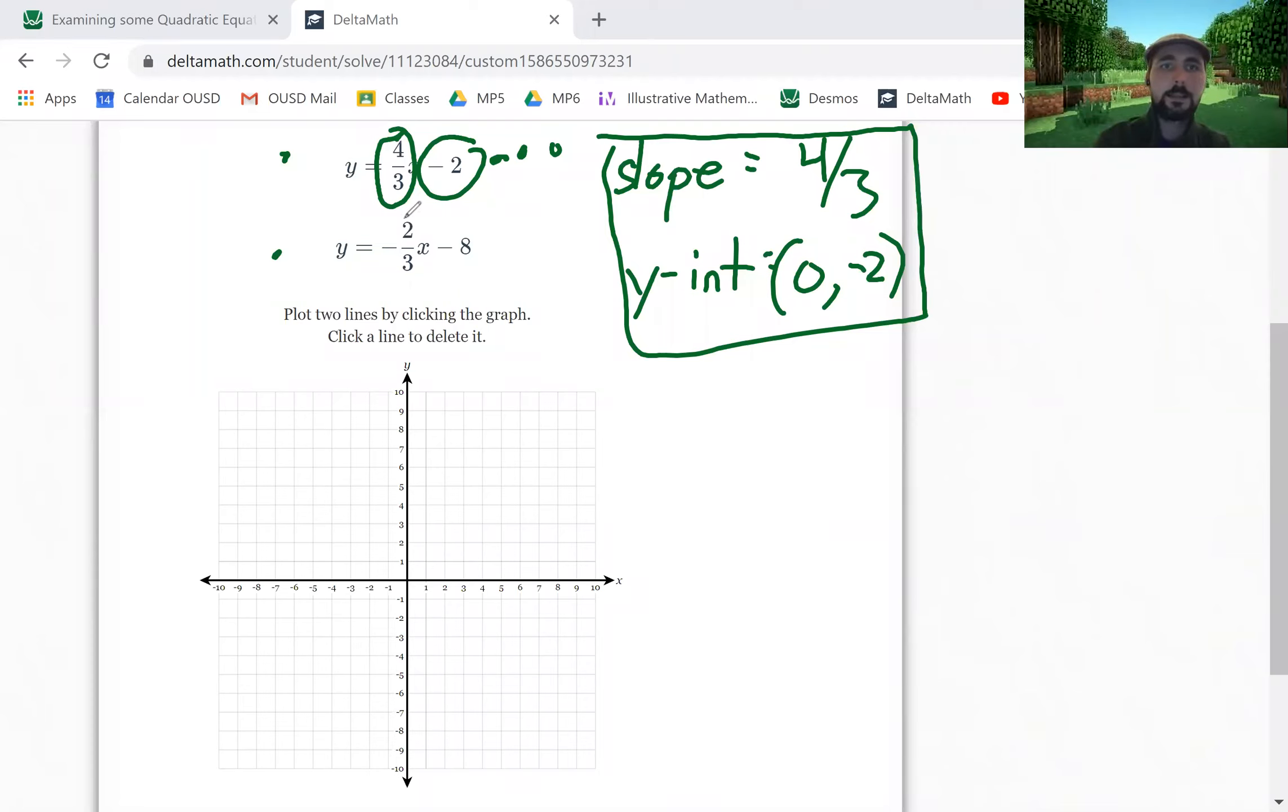We're going to do the same thing. So for the second equation, I see the negative 2 over 3 and I see the negative 8, and I'm going to do another thought bubble.